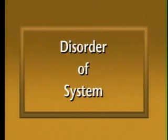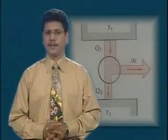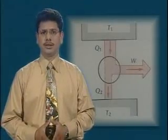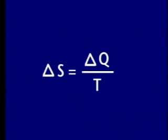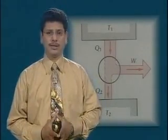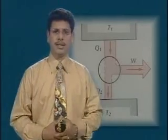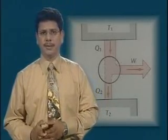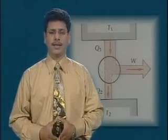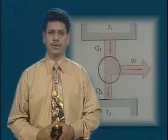Entropy is a measure of the disorder of a system, or a measure of the unavailability of energy. If delta Q is the amount of heat added to a system at constant temperature T, then the change in entropy delta S is given by delta S equals delta Q divided by T. The heat must be added to the system reversibly, meaning the system should follow identical paths whether heat is being added or extracted. Entropy is one of the state variables of a gas, just like pressure, volume, temperature and internal energy, and it measures the state of disorder of a system.